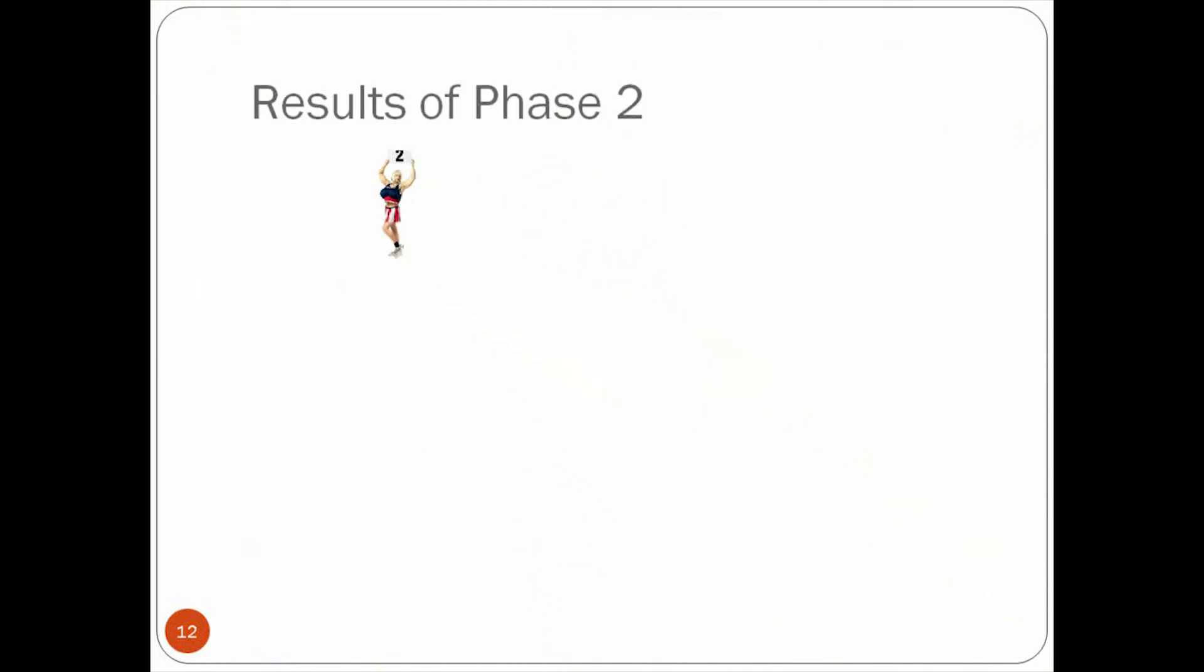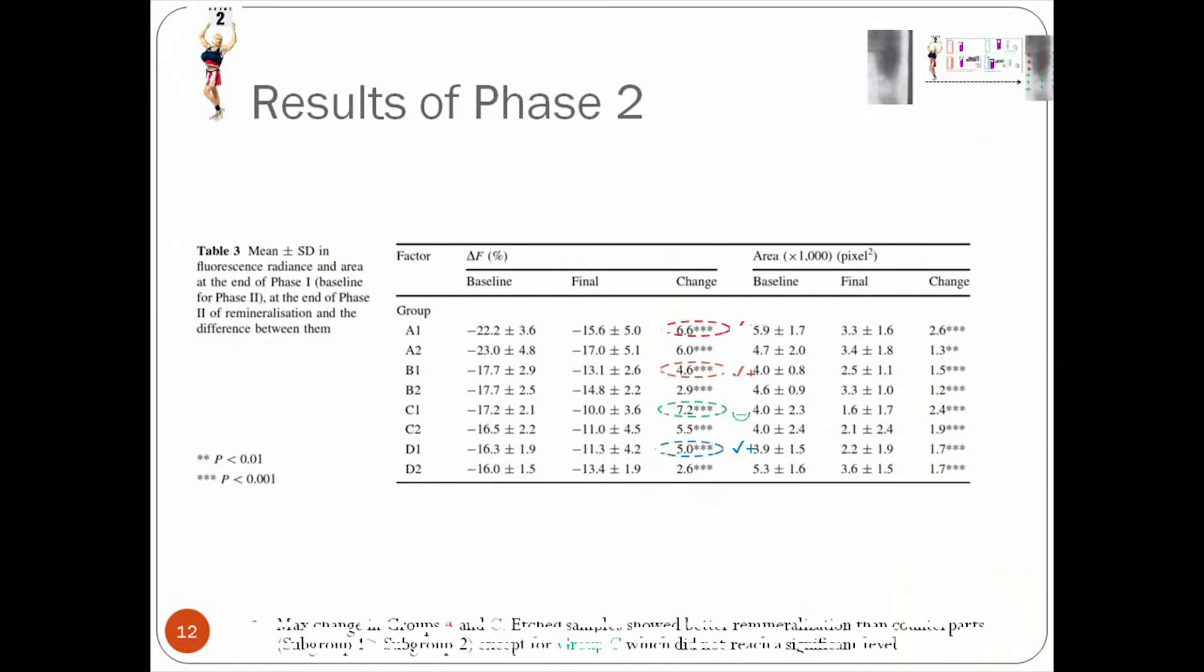Slide 12 shows the results of phase two. This is when we use the subgroups. So let's talk about the subgroups. In the subgroups, we see that there is an increase in the remineralization rate. With C, the maximum changes were seen between groups A and group C. C was the one with the calcium, the GC tooth mousse.